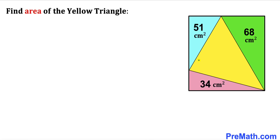Welcome to PreMath. In this video we have a big square that consists of four triangles, such that the area of the blue triangle is 51 cm², the area of the pink triangle is 34 cm², and the area of the green triangle is 68 cm². Our task is to calculate the area of the yellow triangle.